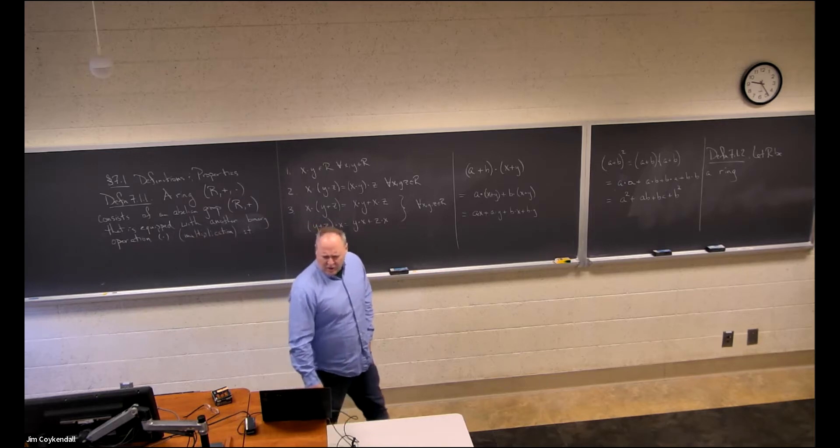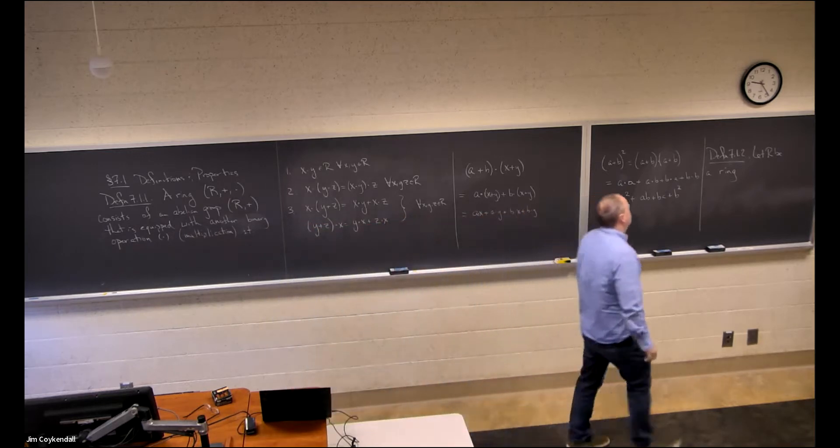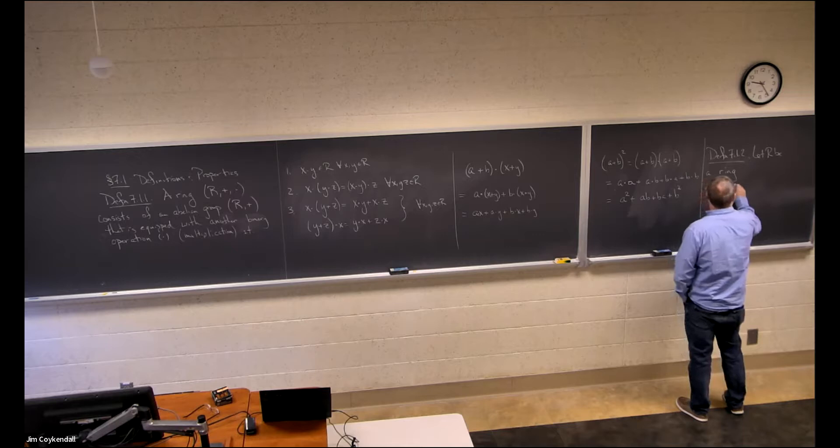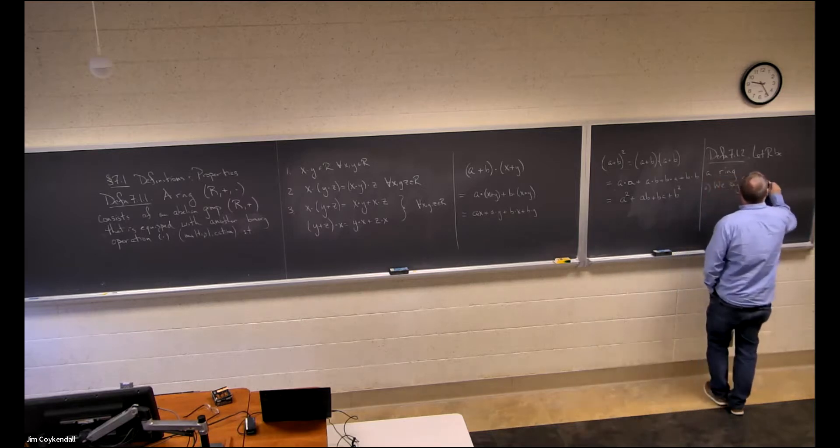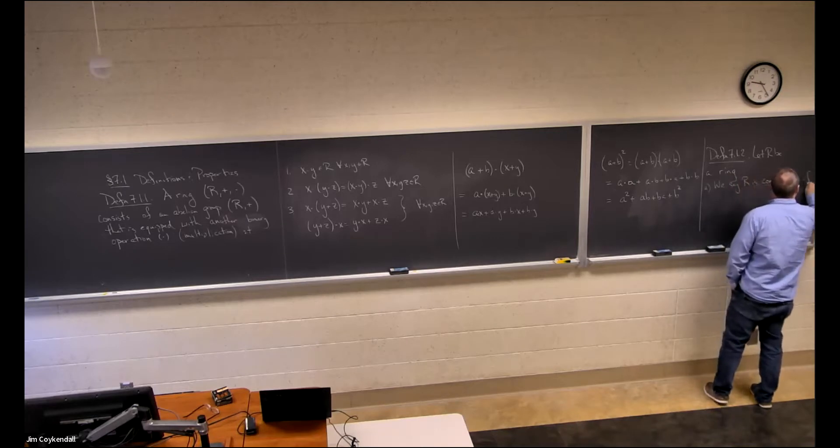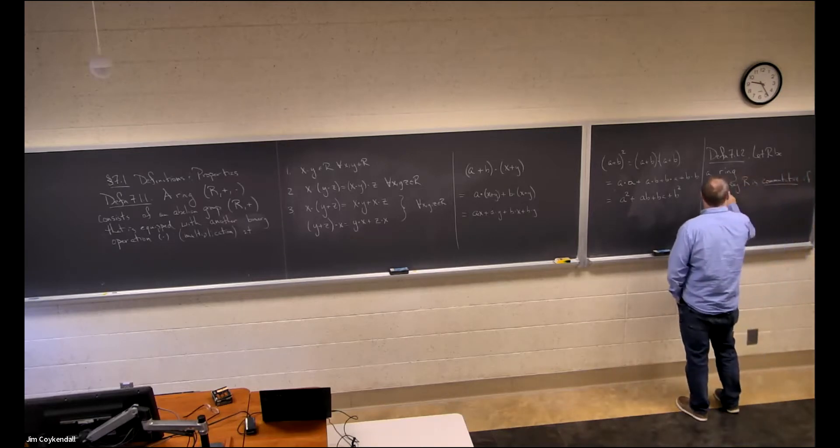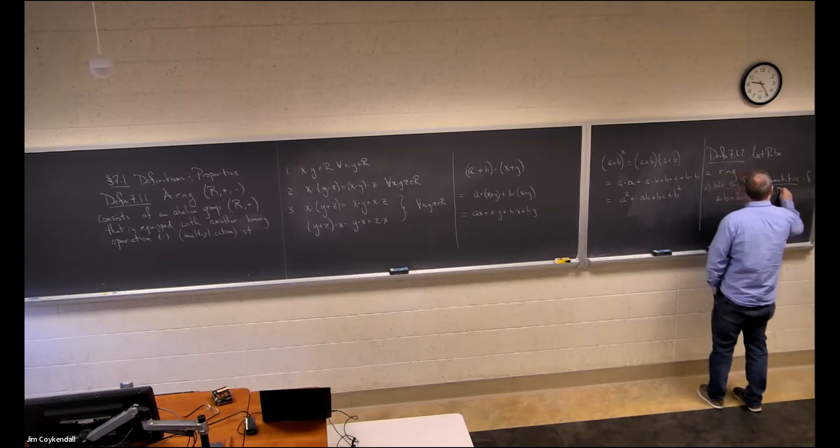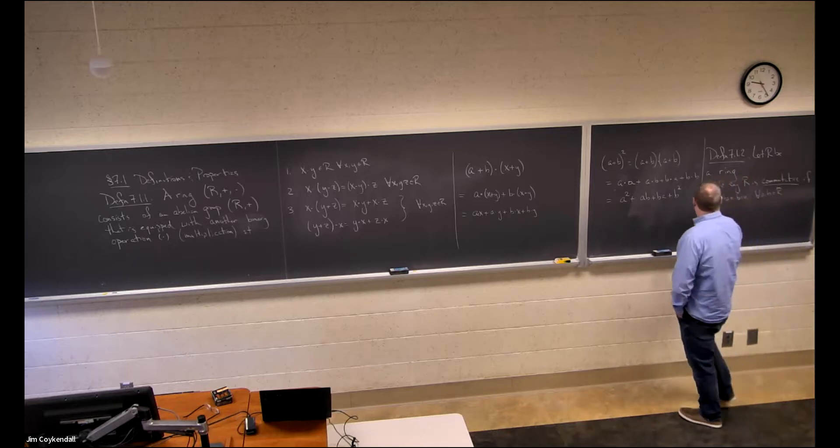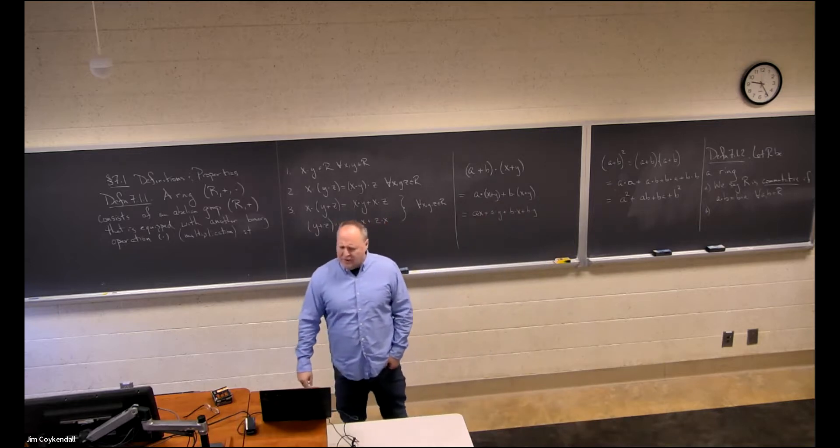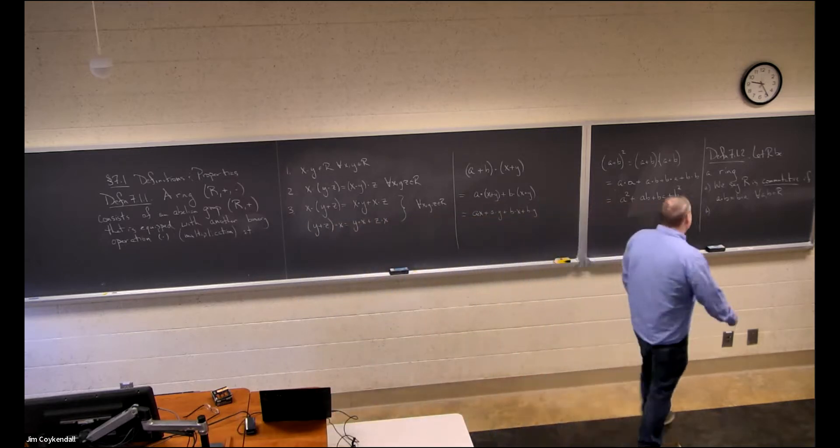So this is a further modifier for a ring. So we say that R is commutative if for all a, b in R, ab equals ba.